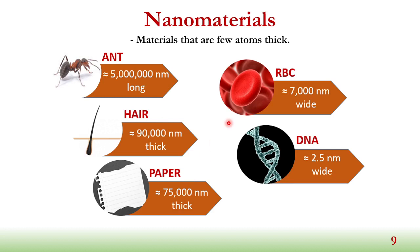Moving to a smaller scale: the width of red blood cells is approximately 7,000 nanometers. DNA, or deoxyribonucleic acid, is actually approximately 2.5 nanometers wide. When we are talking about quasi one-dimensional materials or two-dimensional materials, we are referring to this range — materials that have ranges from 1 angstrom or from 2.5 nanometers to approximately 50 nanometers or slightly larger.